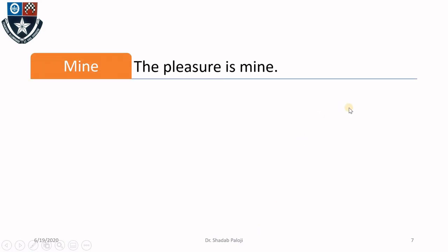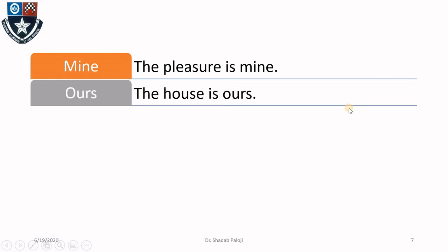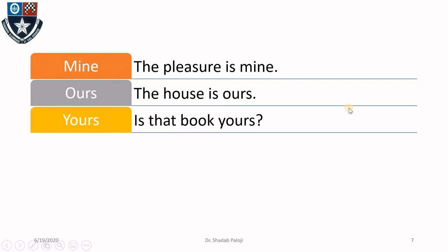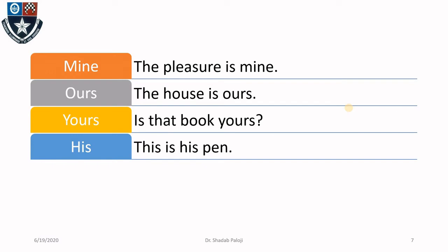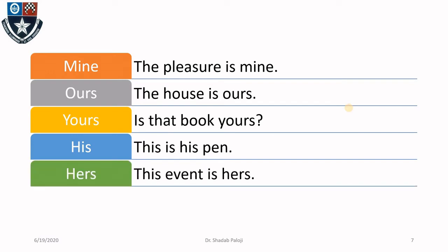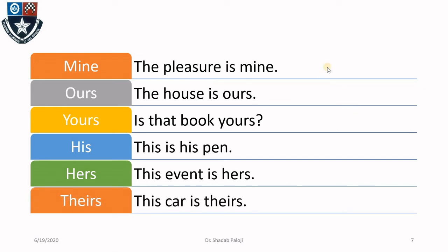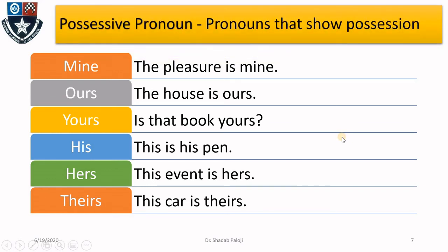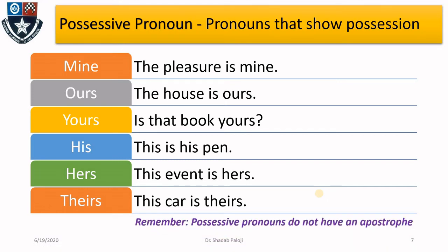Next: mine — 'the pleasure is mine.' Ours — 'the house is ours.' Yours — 'is that book yours?' His — 'this is his pen.' Hers — 'this event is hers.' Theirs — 'this car is theirs.' These are called possessive pronouns — pronouns that show some kind of possession. Notice that everywhere apart from 'mine,' there is an 's,' but there is no apostrophe. So when we are using a possessive pronoun, we do not use an apostrophe. Remember: possessive pronouns do not have an apostrophe.